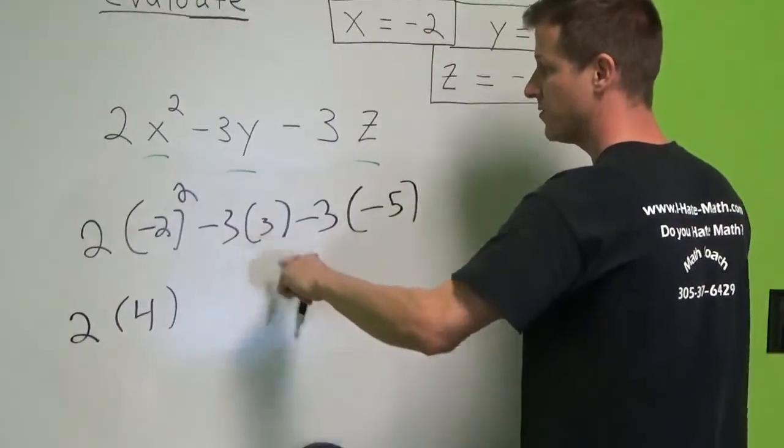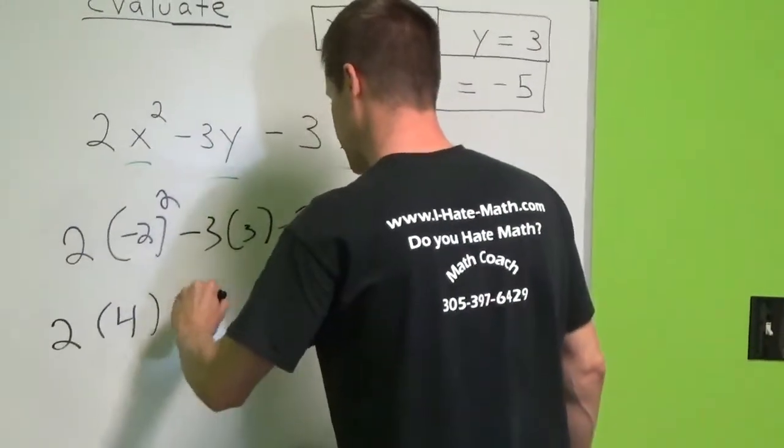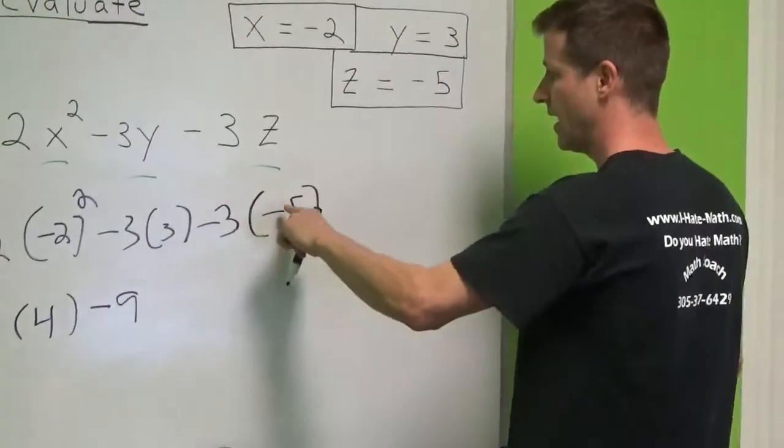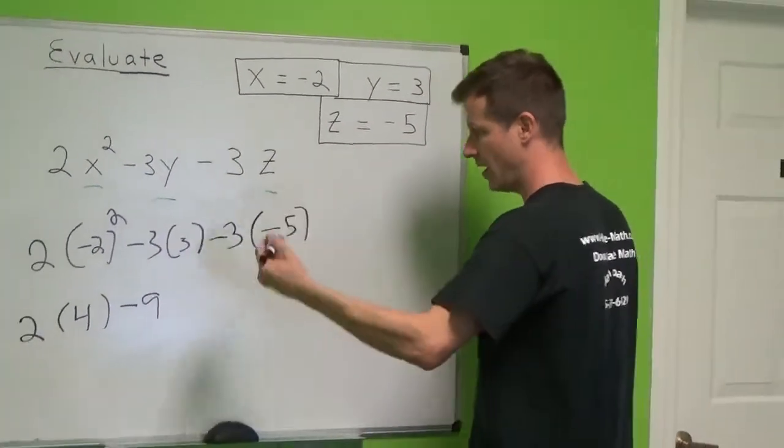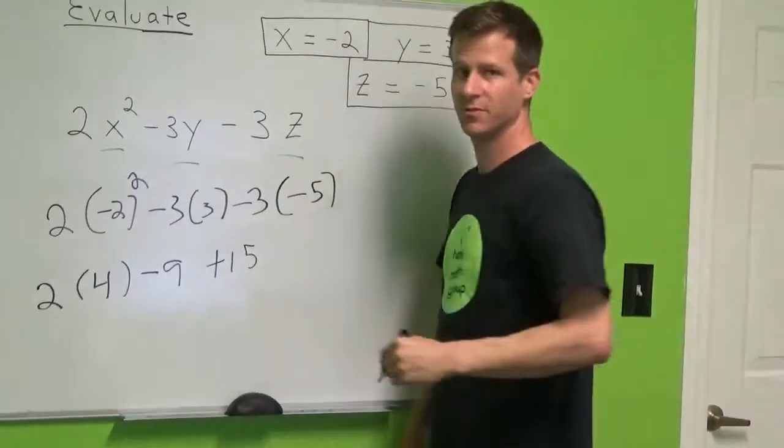Negative 3 times 3 is what? Negative 9. Because a negative times a positive is a negative. Negative 3 and a negative 5. Negative times a negative is a positive. Plus 15 when you multiply.